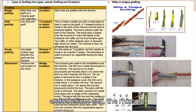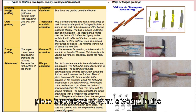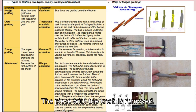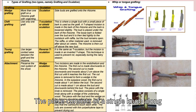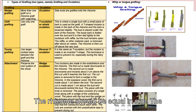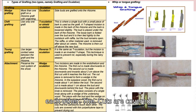Wedge oculation: two incisions are made in the rootstock. The first cut is made downwards into the rootstock. The second cut is made downwards and inwards about two centimeters above the first cut until it reaches the first cut. The cut piece is removed to form a wedge in the rootstock. In the eyepiece wood, the first cut is made about one centimeter below the bud; the second cut is made about one centimeter above the bud and downwards behind the bud. The piece with the knob is removed. The piece consists of a single knob along with a wedge of the underlying wood. The piece with the bud and the wedge on the rootstock should be equal in size. The bud is placed in the wedge in the rootstock such that the cambiums touch each other. The cuts are covered with thin polyethylene tape to prevent drying out.